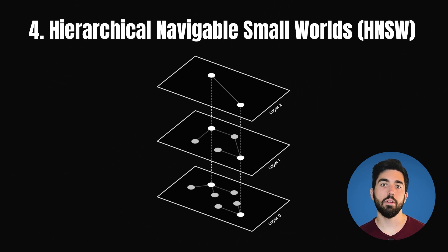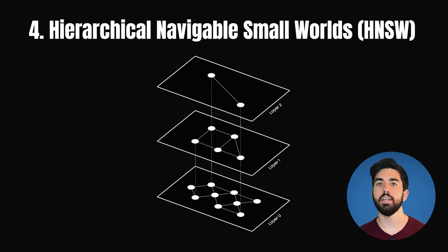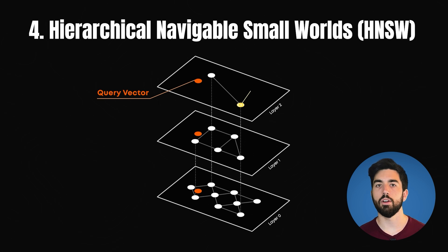Each node is linked to its nearest neighbors, creating a multi-layered structure. Then you search: when searching for a vector, you again begin at the top layer.